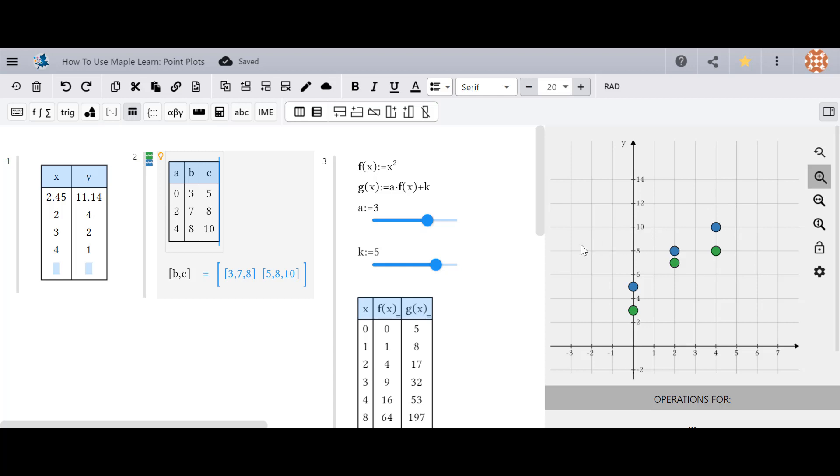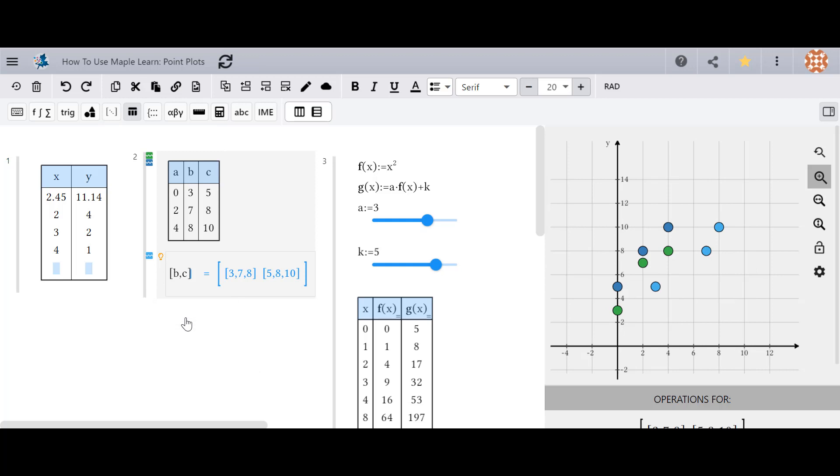Placing square brackets around column names allows you to work with the data and create point plots with different combinations of columns. Typing B, C will plot points with corresponding B values as their x-coordinates and C values as their y-coordinates.